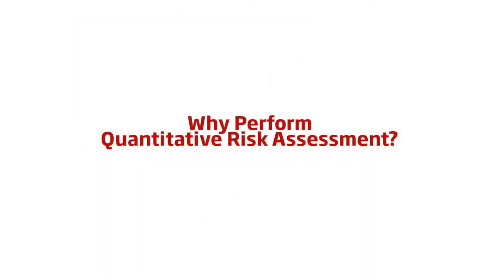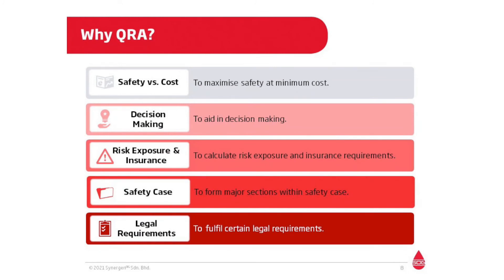So why do we perform a QRA? A QRA is so common in the energy industry that sometimes we may have forgotten why we do it in the first place. There are many benefits of quantifying risks in a facility. Firstly, QRA can be used as a benchmarking tool to compare risks among similar facilities. Performing risk assessments for different risk reduction options also allows us to weigh the improvement in terms of risk levels against their costs. The findings of a QRA allow us to identify key risk drivers or key risk areas, leading to a more targeted approach for risk reduction. Not to mention, a QRA is often a compulsory requirement in certain industries or countries. QRA may be performed as part of a safety case or HSE case to demonstrate that the risk of operation is kept to as low as reasonably practicable.